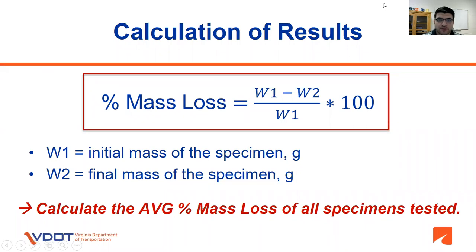Calculation of results: the percent mass loss is calculated as the ratio of the difference between the initial mass of the specimen (W1) minus the final mass of the specimen (W2), over the initial mass (W1). The entire ratio is multiplied by 100, giving mass loss in percentage. Once the test is conducted on three specimens, the average percent mass loss of all tested specimens is then calculated.